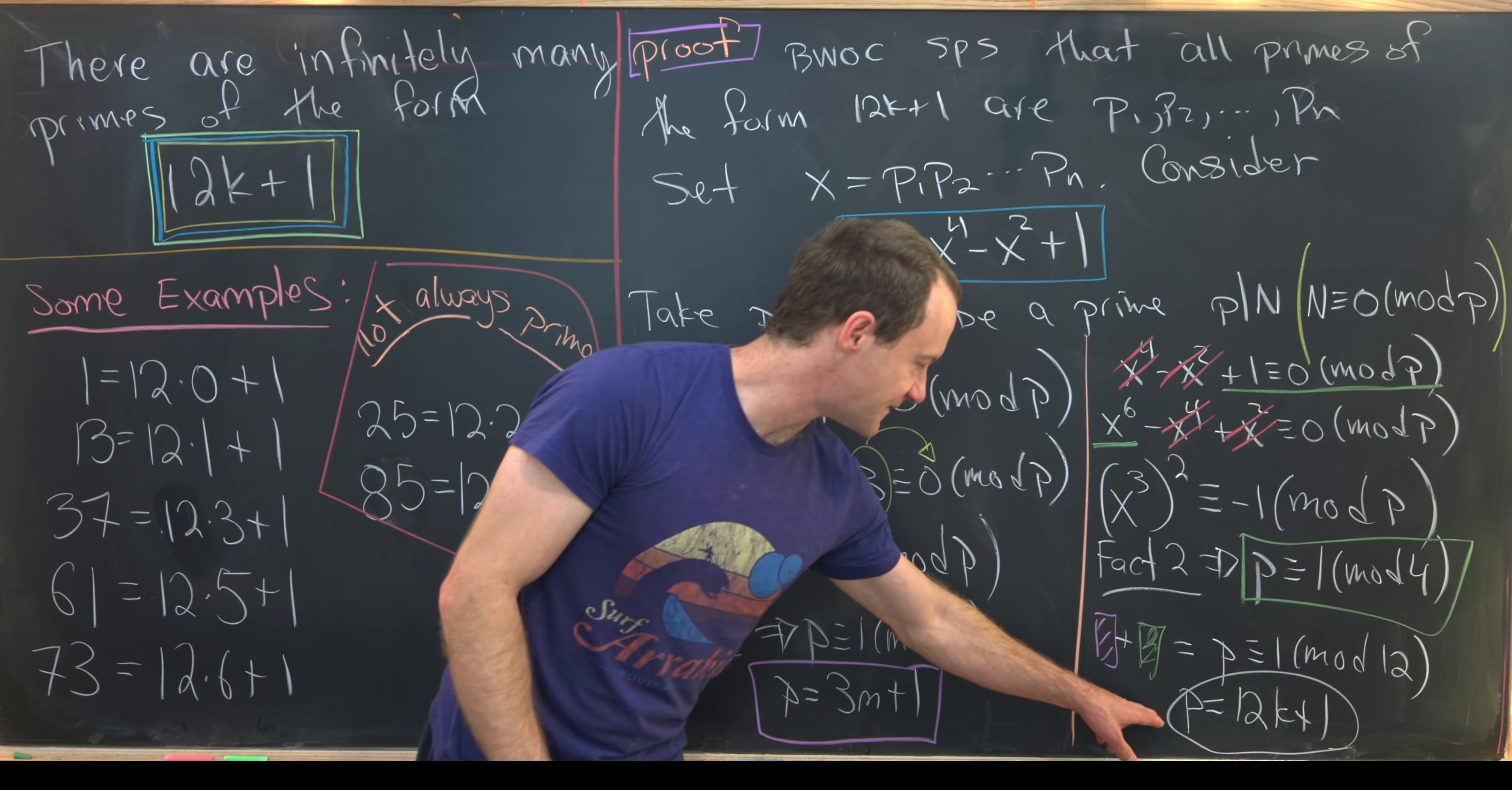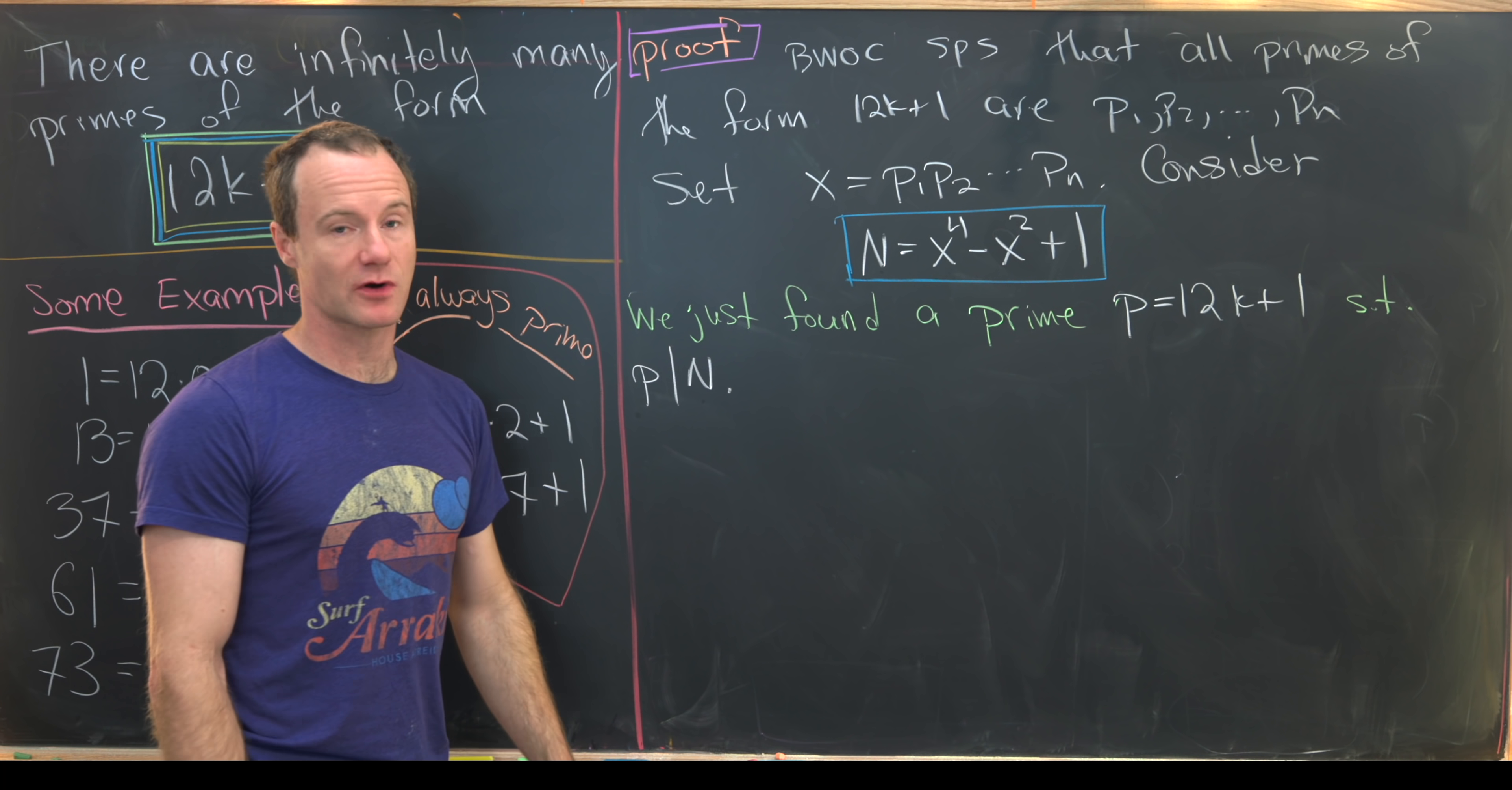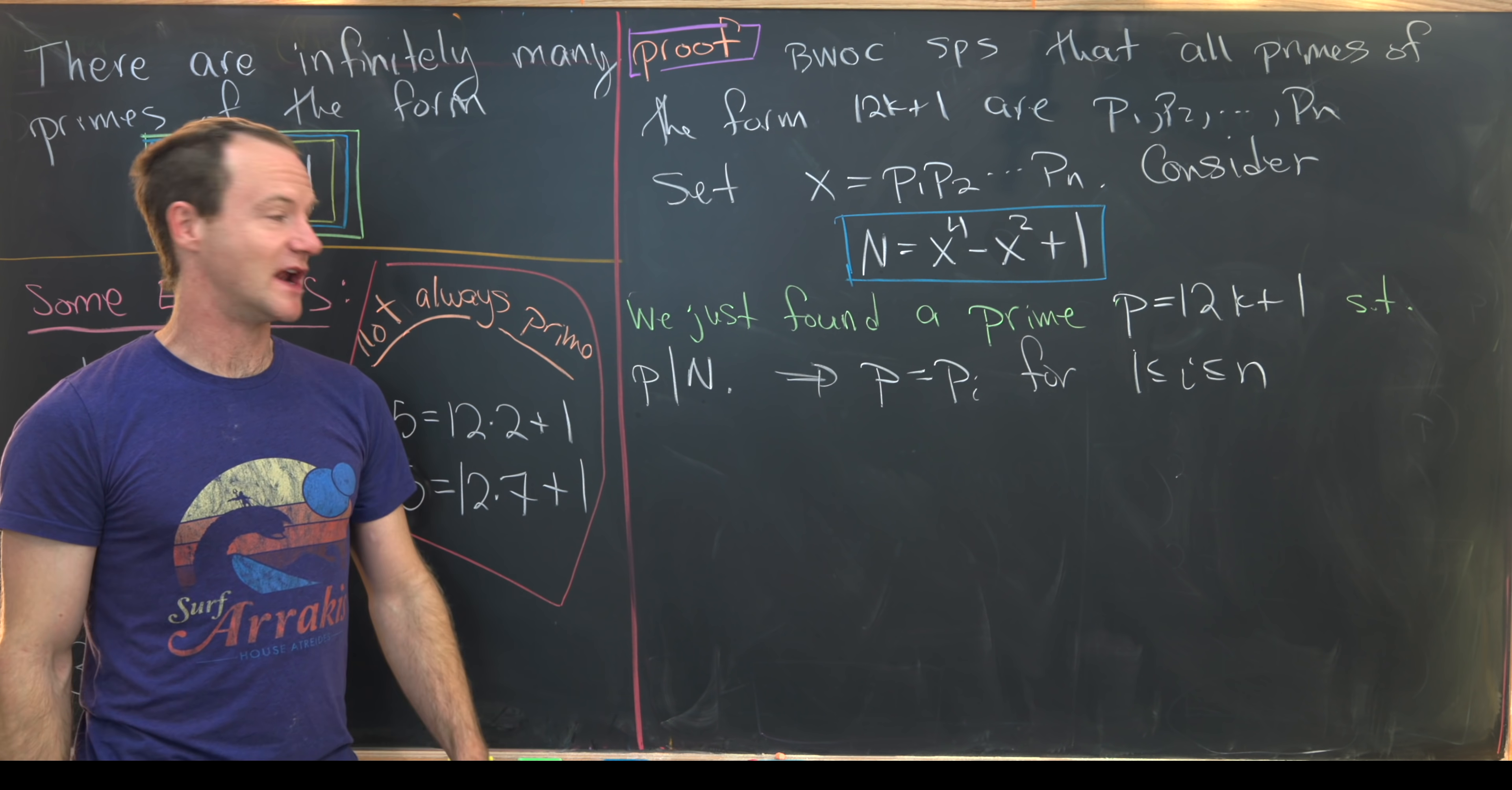So now let's take this fact which we've just derived, bring it up here, and then we can build our contradiction. So on the last board, we found a prime p, which was of the form 12k plus 1, that divided n. But let's notice by our assumption up here, which is towards the contradiction, we only have finitely many primes of the form 12k plus 1, and they're from this list, p1, p2 up to pn. So that means that the prime that we found must be on this list. In other words, we have p is equal to pi for some i between 1 and n. And that's going to cause quite a bit of a problem.